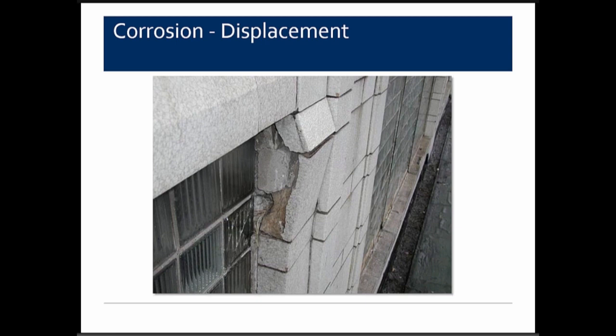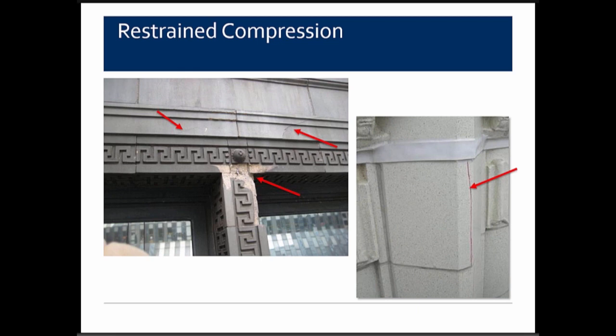Displacements lead to failures, which are easier to see visually. Restrained compression occurs when terracotta units want to grow but are bound up by lintels, causing cracking and spalling in the jams. On concrete frame buildings, the concrete wants to shrink while the terracotta wants to expand, creating restrained compression that causes cracking in the units.